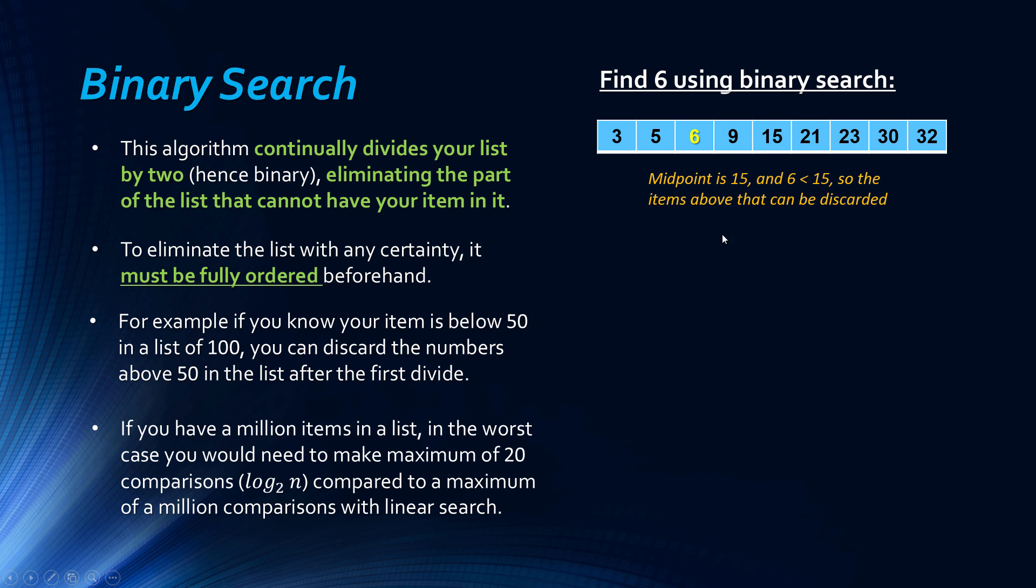And because six is less than 15, and we know it's ordered, we can eliminate 15, and we can eliminate everything above 15. We know that because it's ordered in ascending order, six is not going to be above 15. And so we can eliminate everything above it, effectively doing this, just blanking it out. And so we're left with the newer list, and the middle point in this is going to be five.